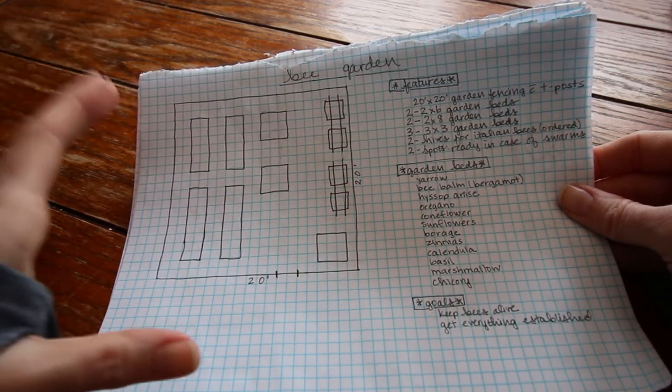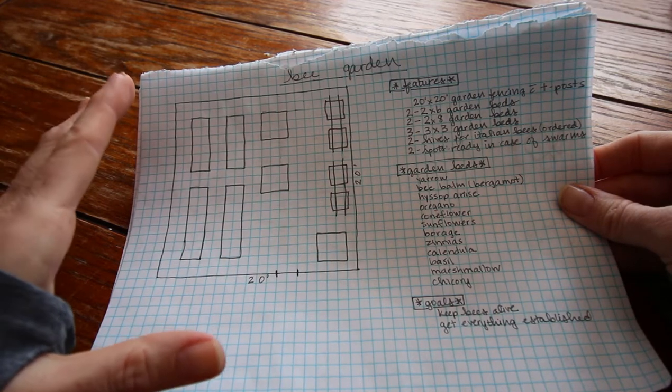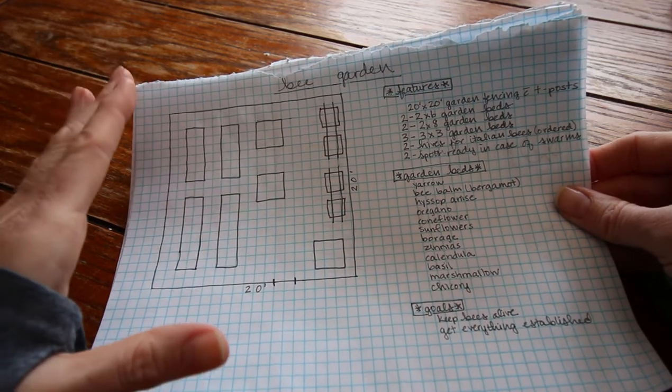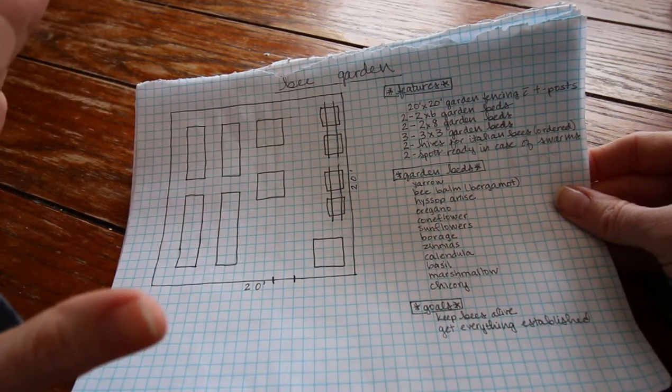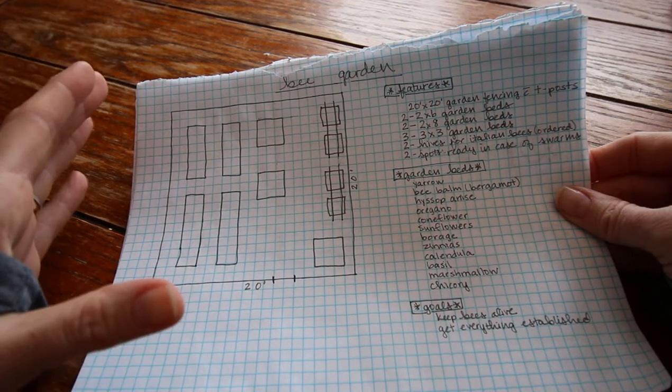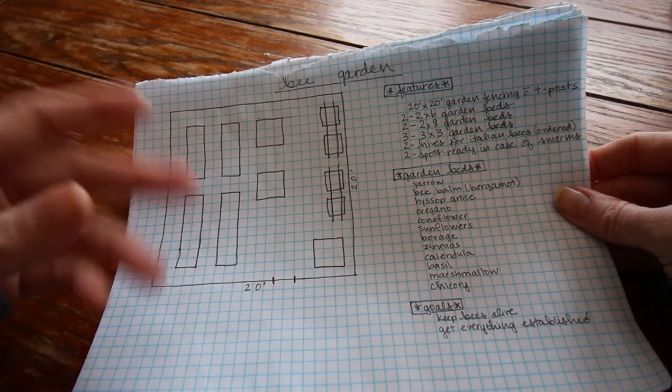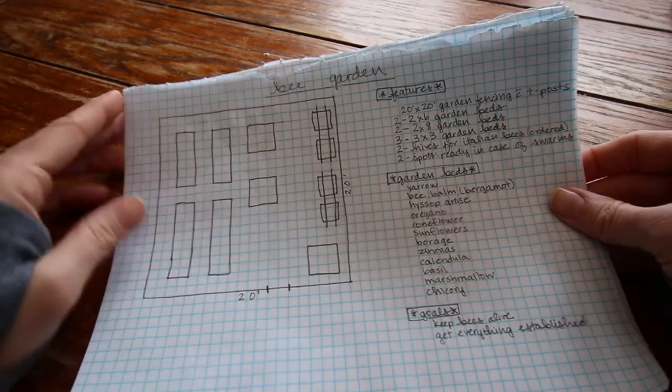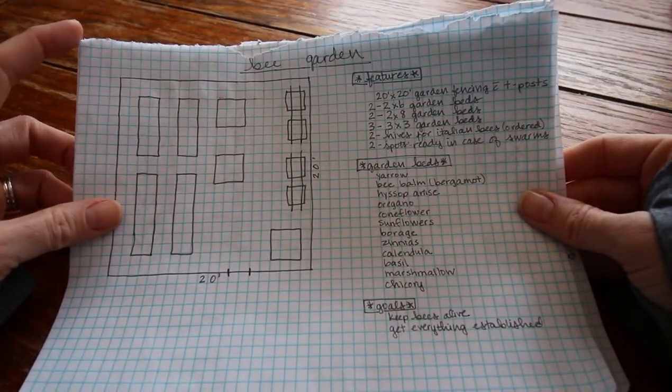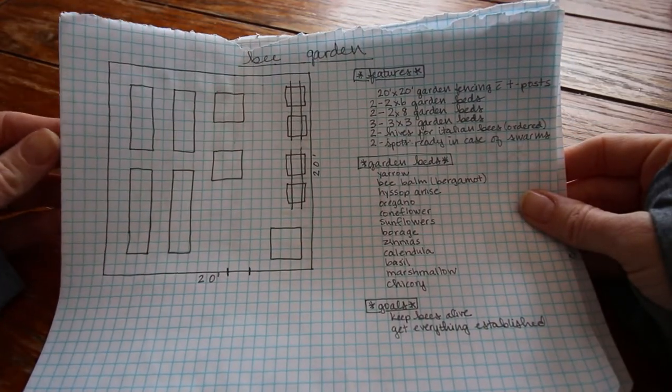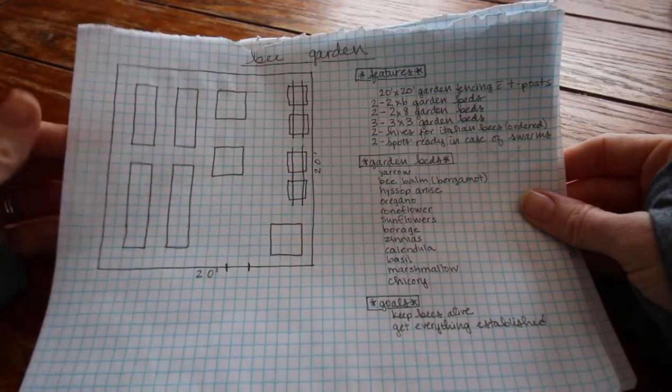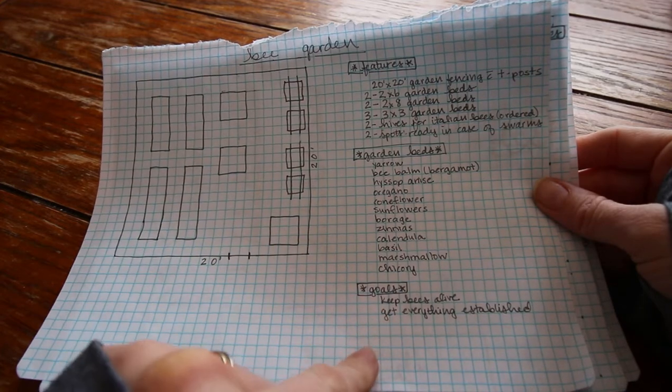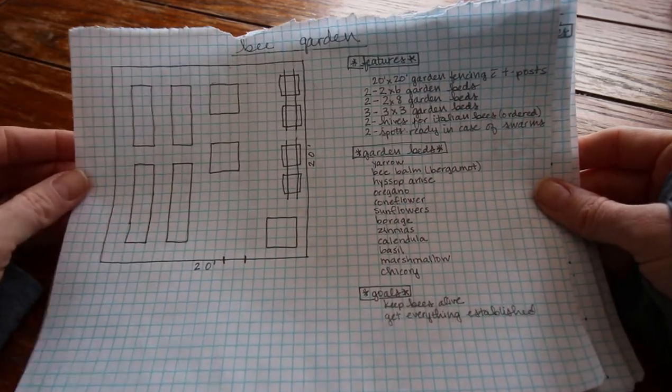Those fields are pretty far away from us. So the more that I plant here for them, the closer they can stay. This is not nearly enough but hopefully this is a good step in the right direction. That's the bee garden. My goals are to keep the bees alive and get everything established and then we'll just build on it every year.